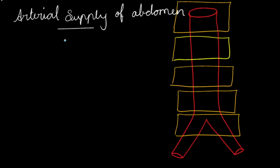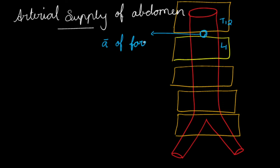Hello everyone. In our anatomy on blackboard series, today we are going to discuss the arterial supply of the abdomen. We have three ventral branches of the abdominal aorta which mainly contribute to the arterial supply of the abdomen. The first one is the celiac trunk, situated between T12 and L1 vertebra, arising from the anterior side of the abdominal aorta. This celiac trunk is also called the artery of the foregut because it mainly supplies the organs derived from the foregut, up to the second part of the duodenum where the common bile duct opens.